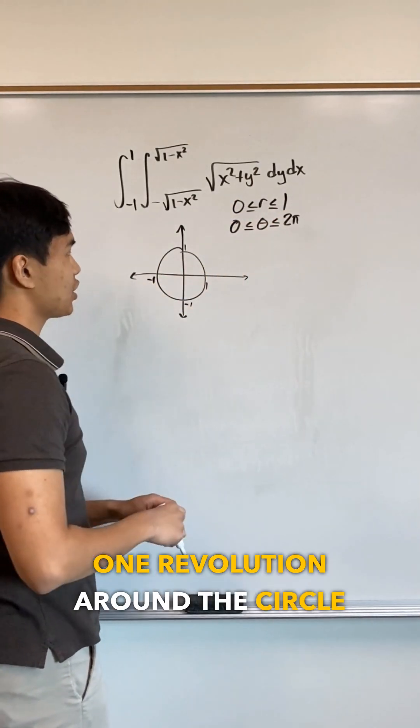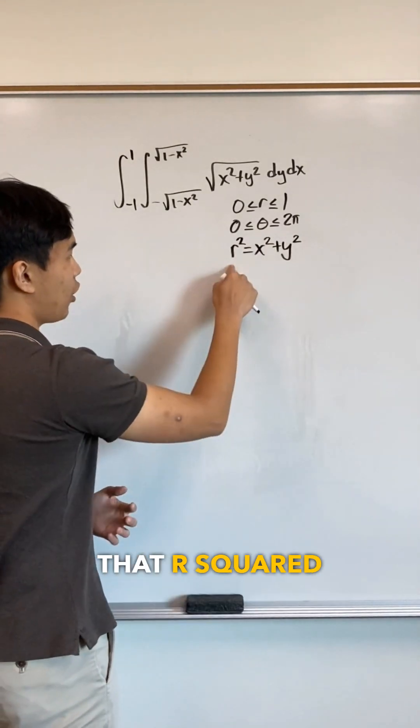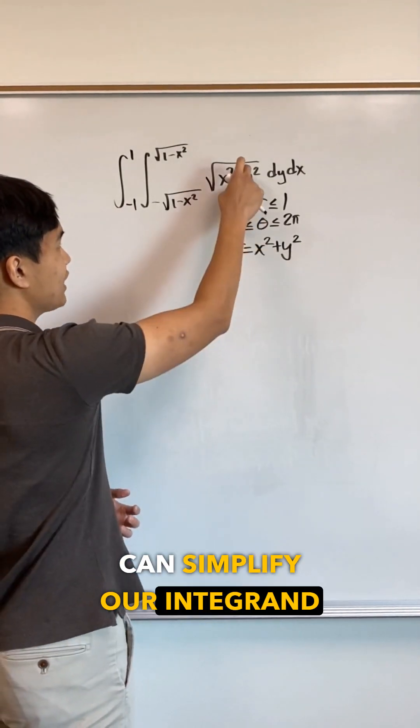This represents one revolution around the circle of radius 1. And we also know that r squared equals x squared plus y squared, which means we can simplify our integrand as well.